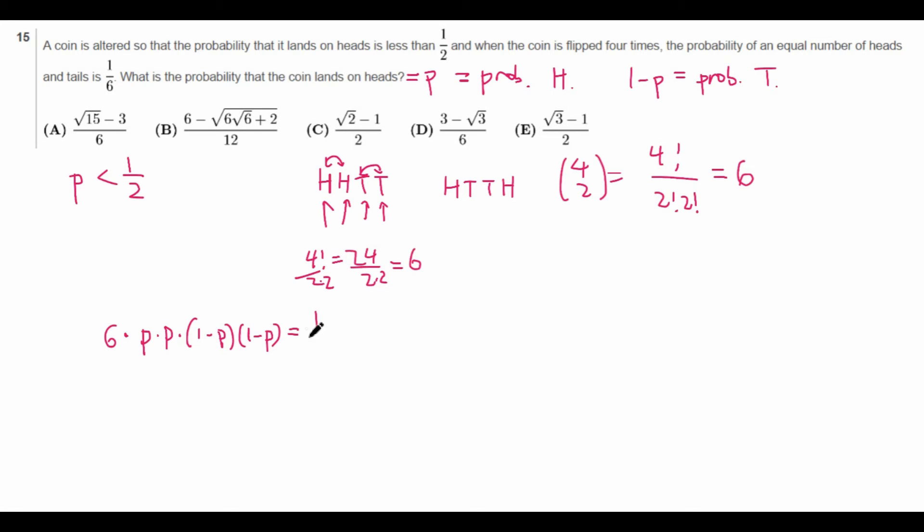And what does this equal? This equals 1/6, which is given in the problem. So we can divide both sides by 6 here and get P squared times 1-P squared is equal to 1 over 36. And then we can take the square root of both sides to get P times 1-P is equal to 1/6. Now we can expand P times 1-P to get P minus P squared.